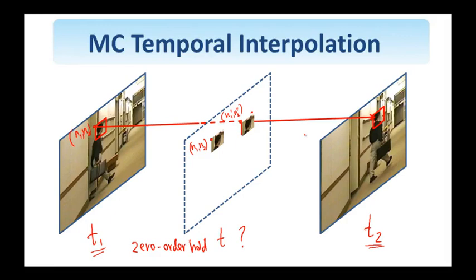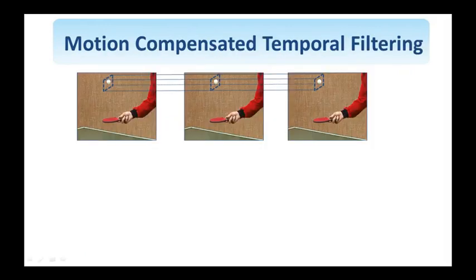And here in this example, the frame we interpolated is in the middle of the two frames. It can be anywhere between the time t1 and t2. And we can have more than one frame. So we can introduce two or three new frames between frames t1 and t2.